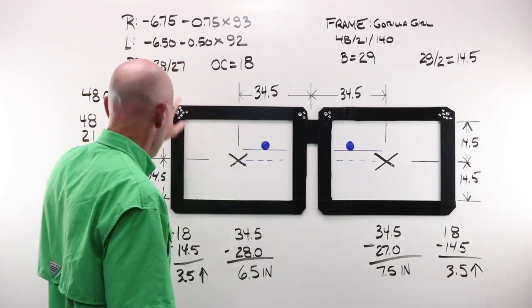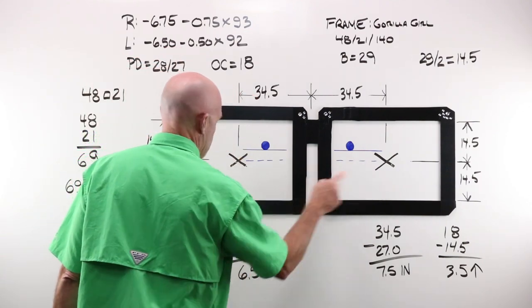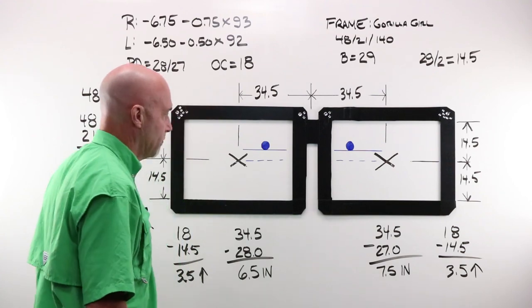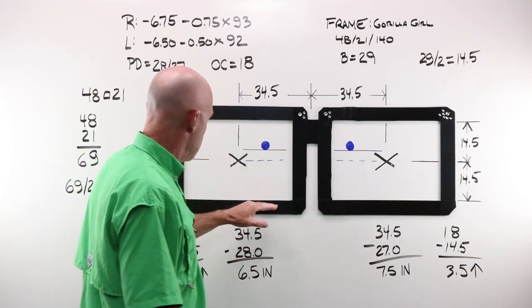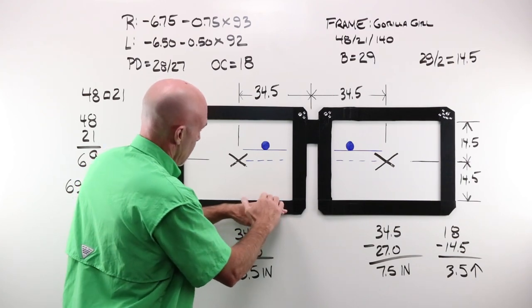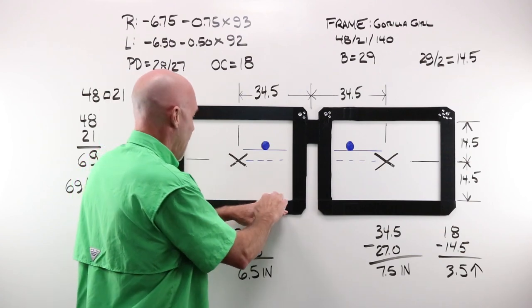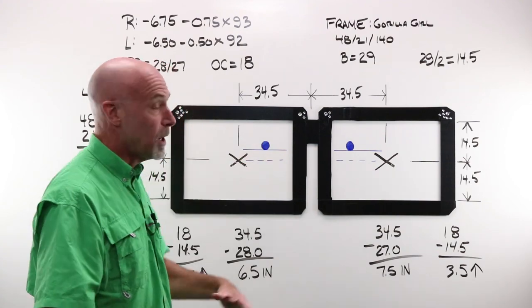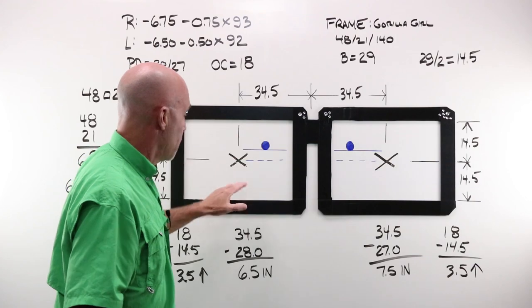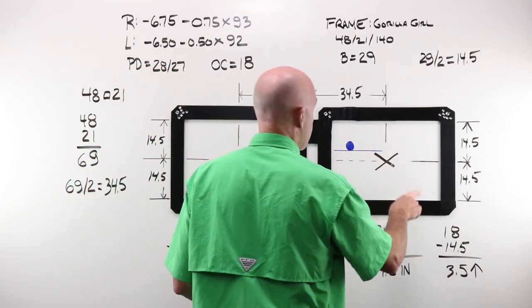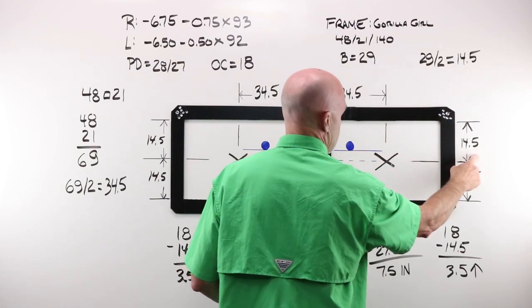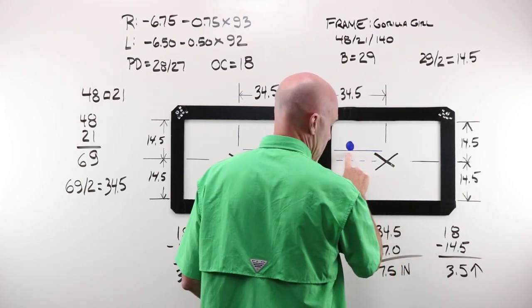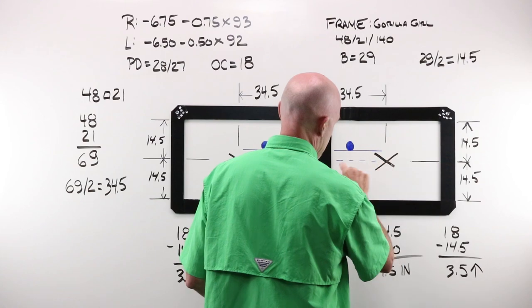If I take my monocular PDs and I subtract them from my geometric center of my eye wire openings, I need six and a half in in my right, seven and a half in in my left. This job calls for an OC height of 18, meaning from the bottom of my eye wire or where the lens would sit within the eye wire according to the boxing system, I want the OC placed 18 millimeters above that point. How do I know how to move that in the blocker? The blocker works the same way horizontally as it does vertically. If I take half of my B of 29 divided by two, I have 14 and a half. If I take my 18 OC height and I subtract my 14 and a half, I need to move my OC up three and a half millimeters from that center line or center point.